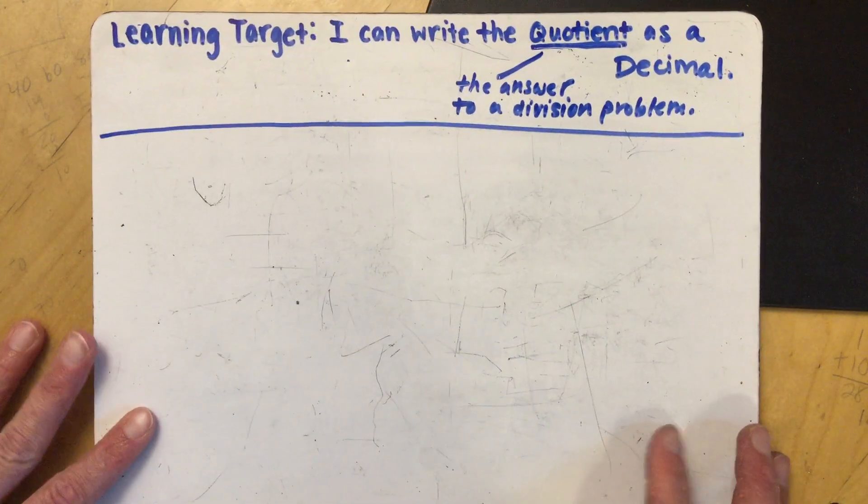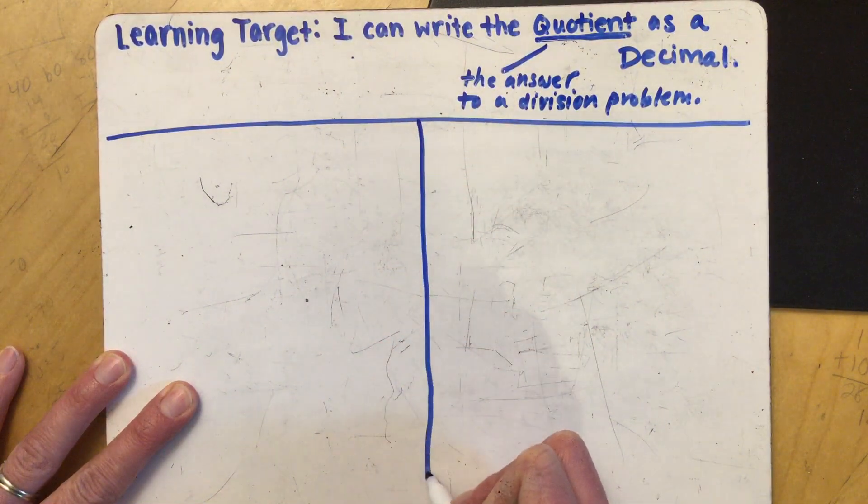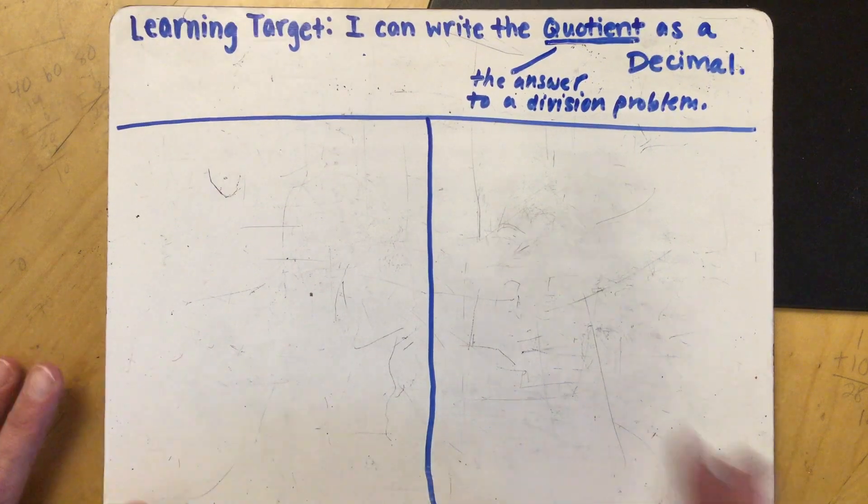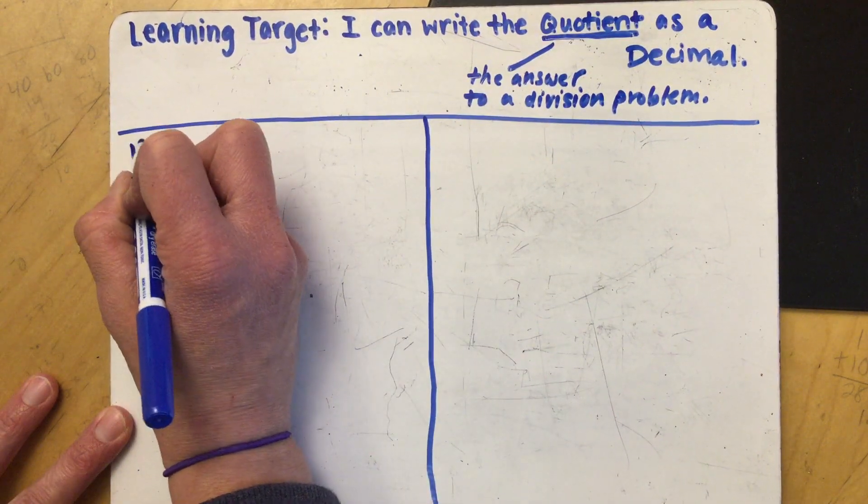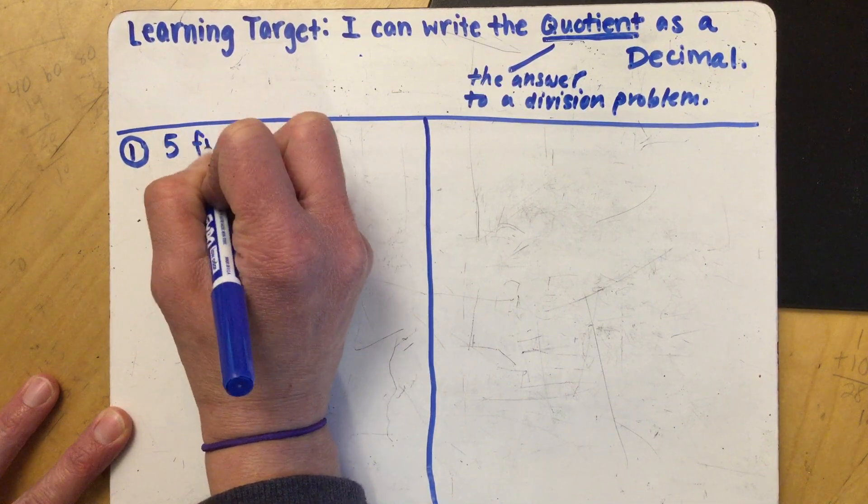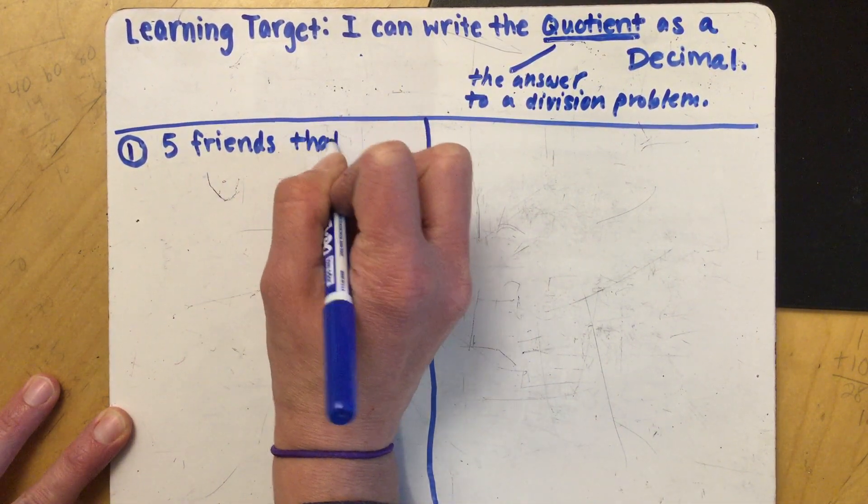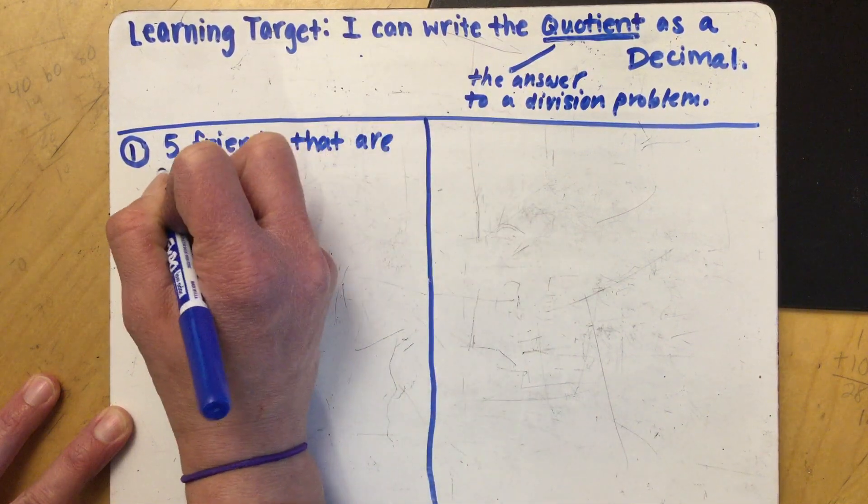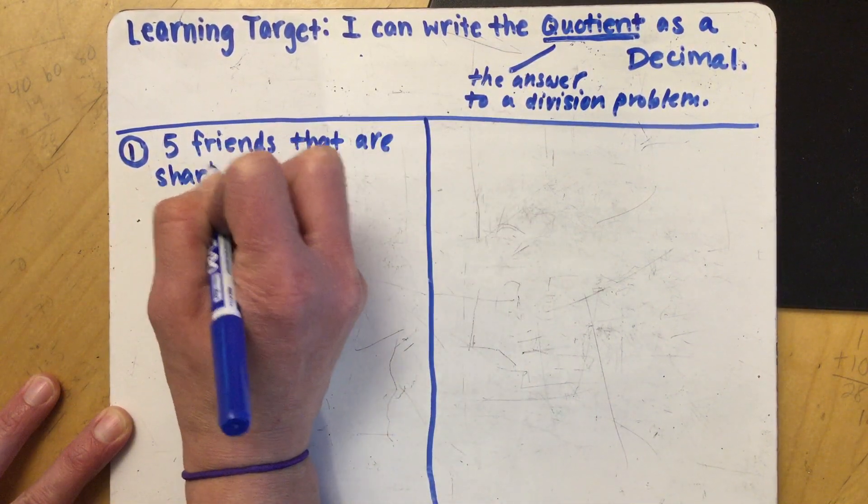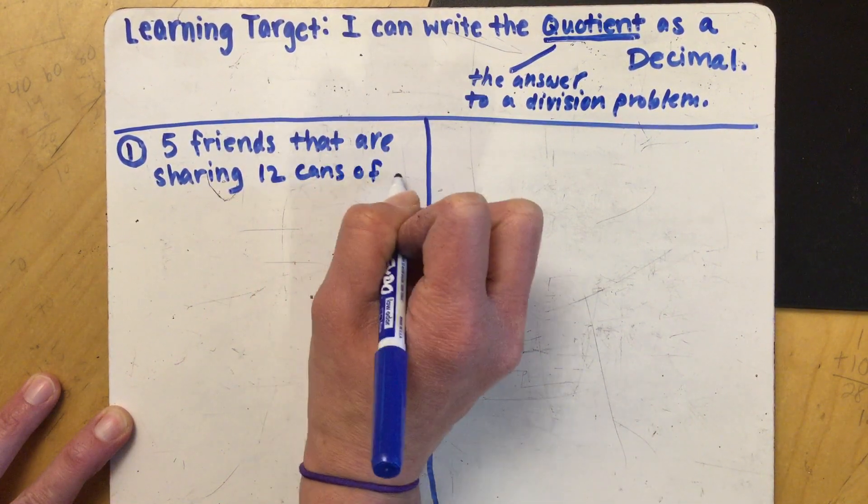Let's look at two examples today. One I want to do a money problem and then the second one I want to do is just a regular sharing problem. So our first problem we're gonna look at today is the following. We have five friends that are sharing 12 cans of pop.